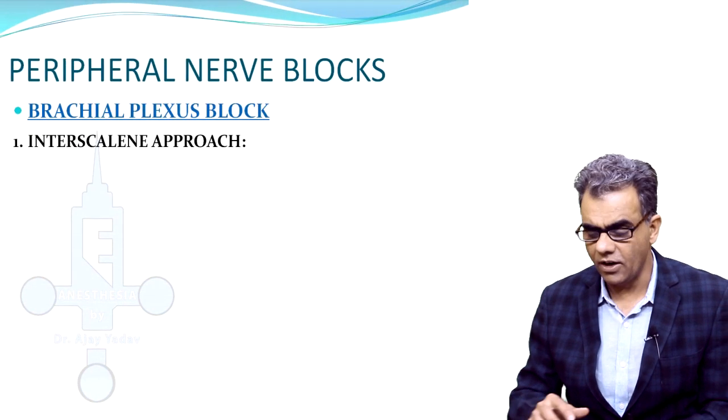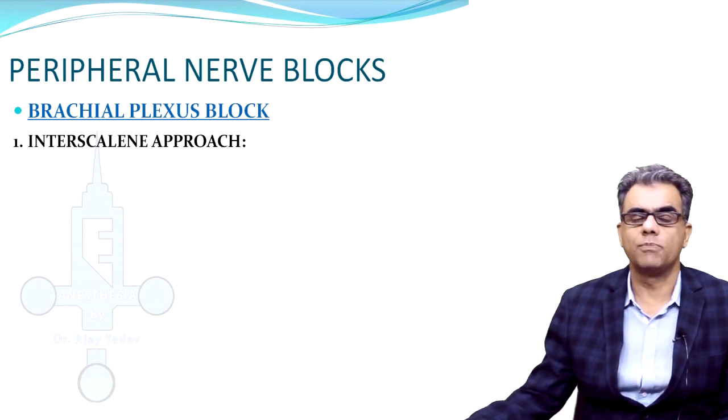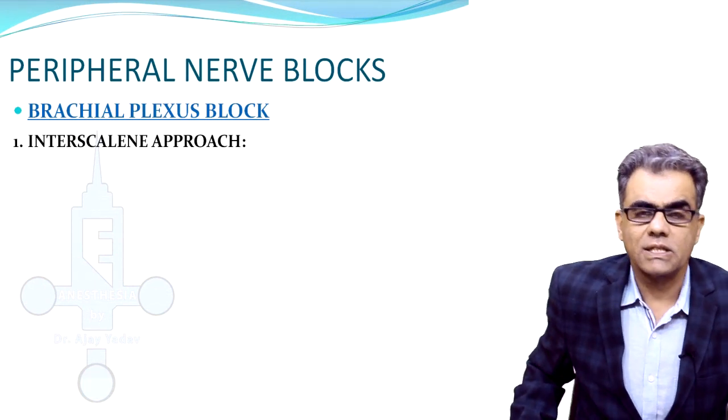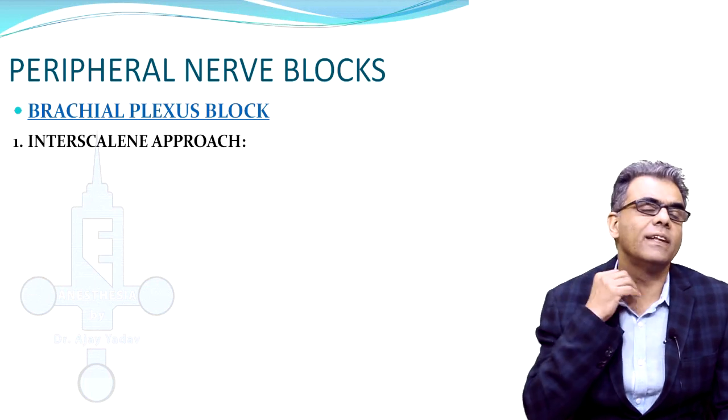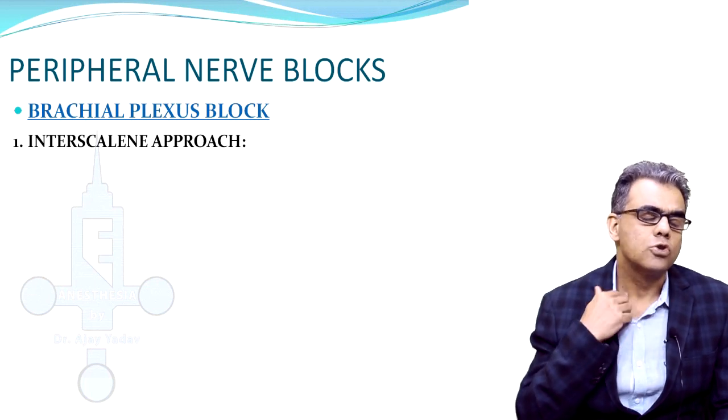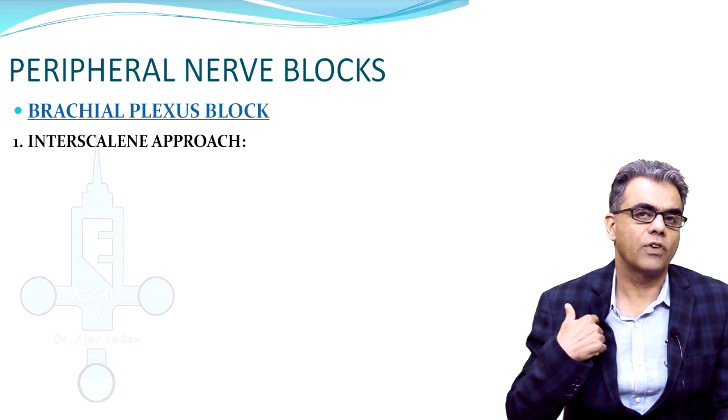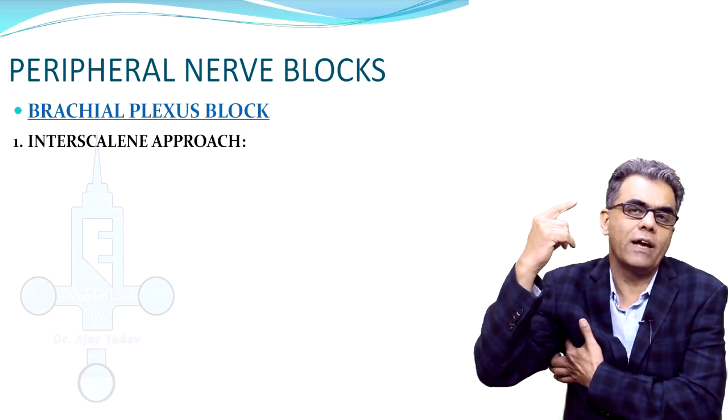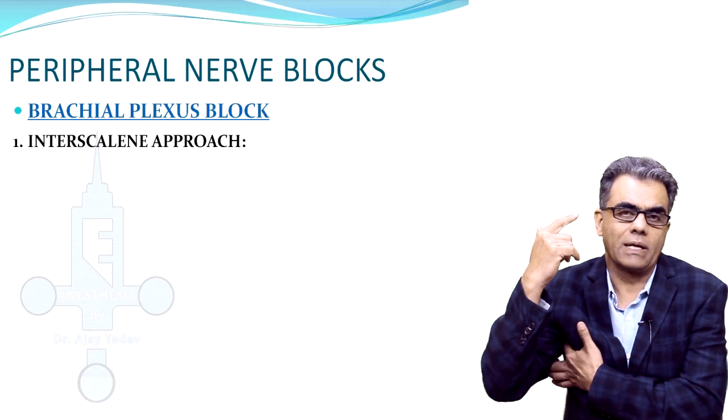Among these peripheral nerve blocks, brachial plexus block is most frequently given. Brachial plexus can be blocked at four different sites: interscalene, supraclavicular, infraclavicular and axillary level.